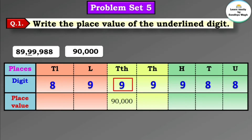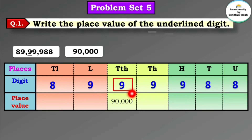Note that the same digit 9 can have different place values depending on its position. If 9 is in the 9 lakhs place, its place value is 9 lakh. If it's in the 10,000 place, the place value is 90,000. In the thousands place, 9's place value is 9,000, and in the hundreds place it is 900. So in a question with an underlined digit, you must carefully identify which place it is in and then find its place value.